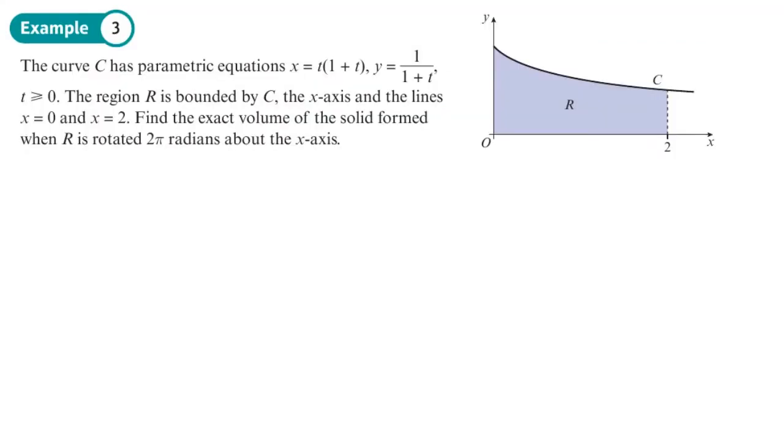Okay, the curve c has parametric equations here for x and this for y, for t greater than or equal to 0. We have the limits of 0 and 2. So my x values are 0 and x equals 2. I'm going to have to change those to t values because it's a parametric equation.